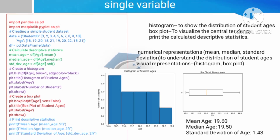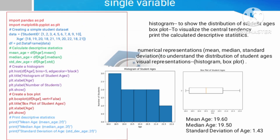That is box plotting. Next, we print mean value, median value, and standard deviation values. Histogram is shown as a visualization technique. Box plotting is a central tendency visualization technique. The numerical representation includes mean, median, and standard deviation, while the visual representation uses histogram and box plot.